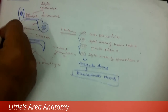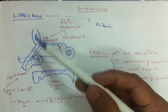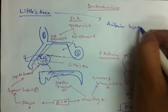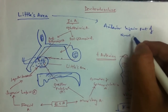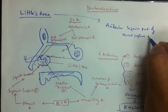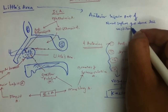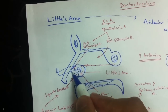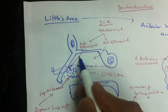This area — Little's area — is situated at the anterior inferior part of the nasal septum, just above the vestibule. Because the vestibule is at the base, and just above the vestibule, at the anterior inferior part of the nasal septum, this part is called Little's area.